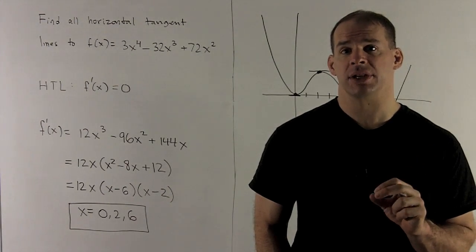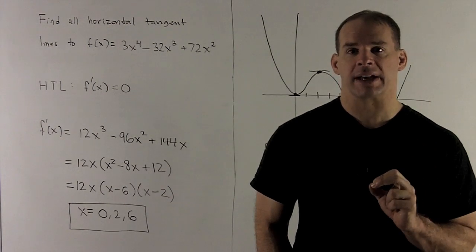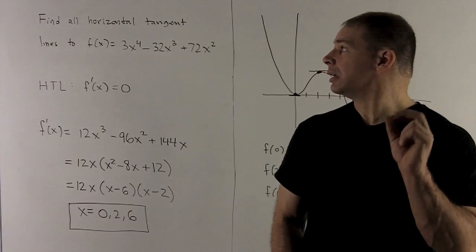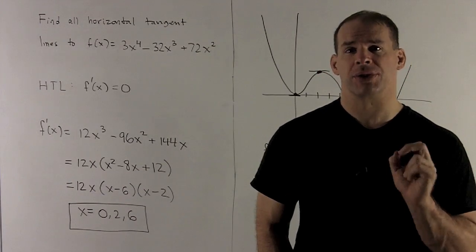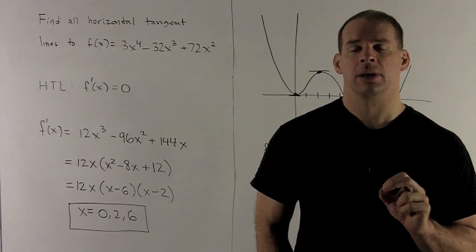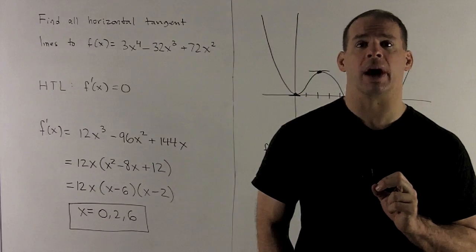Find all horizontal tangent lines to the function f of x equal to 3x to the fourth minus 32x cubed plus 72x squared.